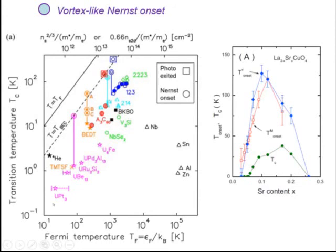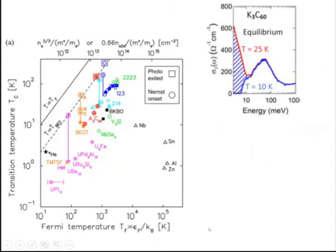Interestingly, for UPt₂Si₂, the onset of the Nernst effect corresponds to the onset of hidden order — and some sort of hidden order actually gives this onset Nernst effect — which also falls on this hypothetical Bose condensation line.